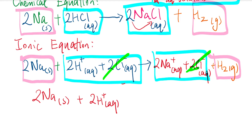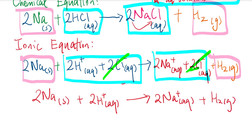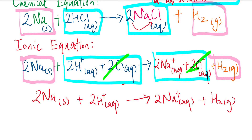Then you rewrite your final ionic equation. I have gotten rid of the chloride ions, and this is my final ionic equation. The actual reaction going on is sodium metal reacting with the hydrogen ion to form sodium ions and hydrogen gas.